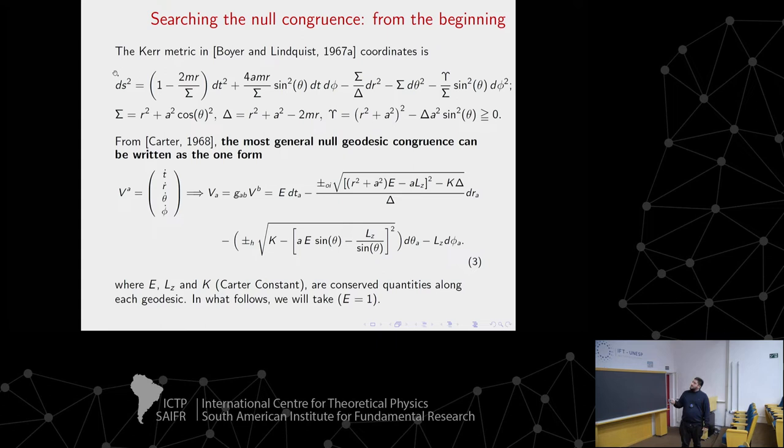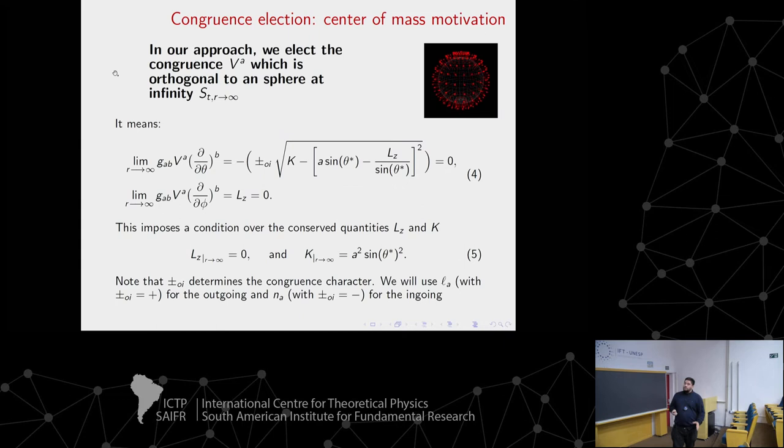If we take the lower index, we work with smaller expressions. Here you can see the most general null congruence. E, L, and K are constants of motion - meaning that if you move along the congruence, E, L, and K remain constant. If we take different values of these constants, we elect different types of congruences. We want to choose the one that works - that has the very nice properties.